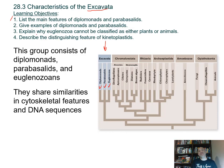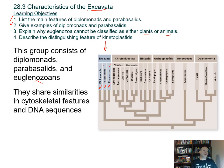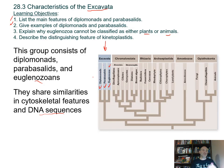Kinetoplastids are a subgroup of the euglenozoa. The euglenozoa are going to be separated into euglenas and kinetoplastids. These subgroups are put together in the Excavata because they share similarities in cytoskeletal features and DNA sequences. The euglenas are like the one seen in the prior video segment: it has a flagella but the body changes shape — what's called euglenoid motion.